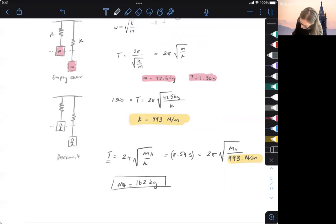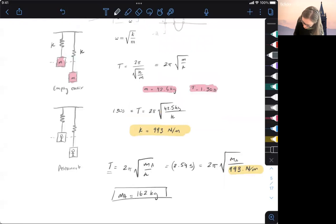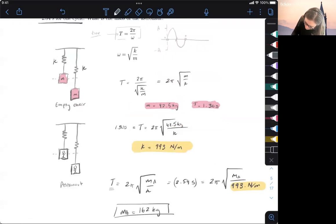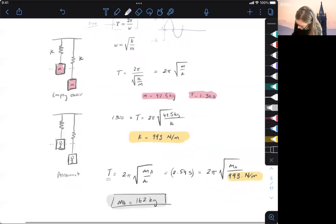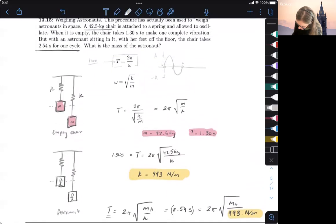So this mass here is actually the mass of the astronaut and the chair, so they're both together. I measured it while it was oscillating on its own and then found the spring constant. And then now I have it oscillating with the astronaut. So what I need to do is I need to take the combined